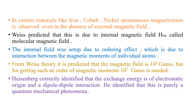In certain materials like iron, cobalt, and nickel, there is spontaneous magnetization observed even in the absence of an external magnetic field. It was predicted that this is due to an internal magnetic field called the molecular magnetic field. This internal field was set up due to ordering effects — because of the interaction between the magnetic moments of individual atoms — and that is responsible for spontaneous magnetization, as predicted by Weiss.